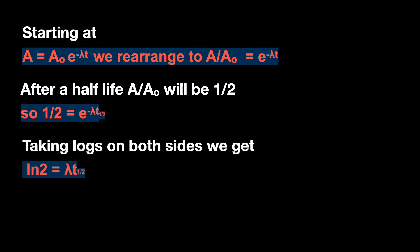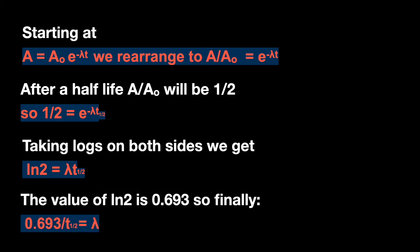Taking logs on both sides, we get the natural log of 2 equals lambda t. And the natural log of 2 is equal to 0.693, so a final equation.